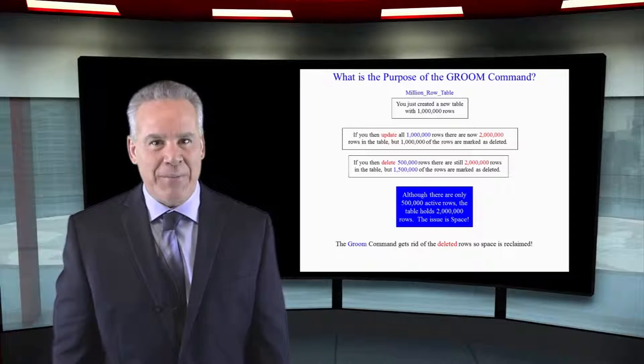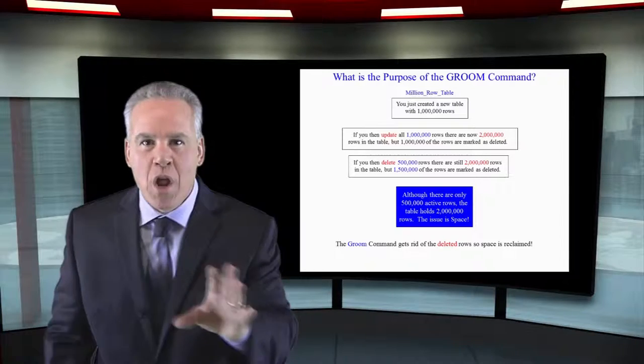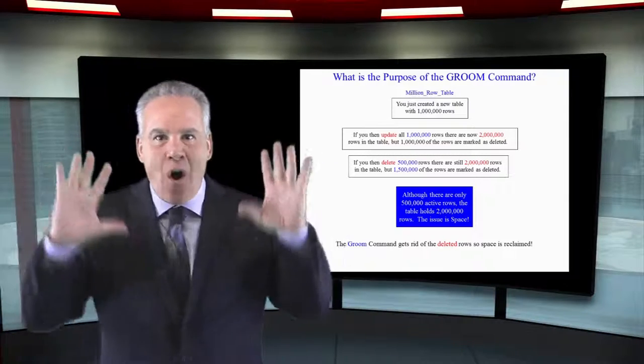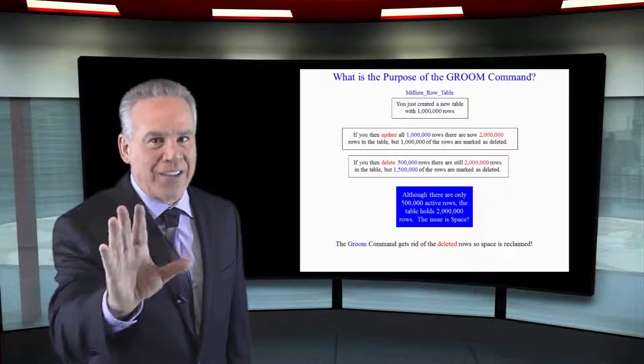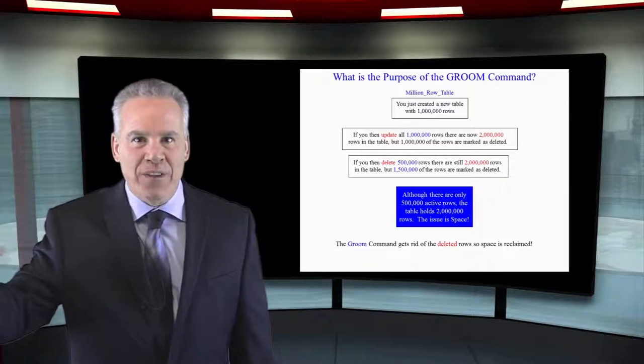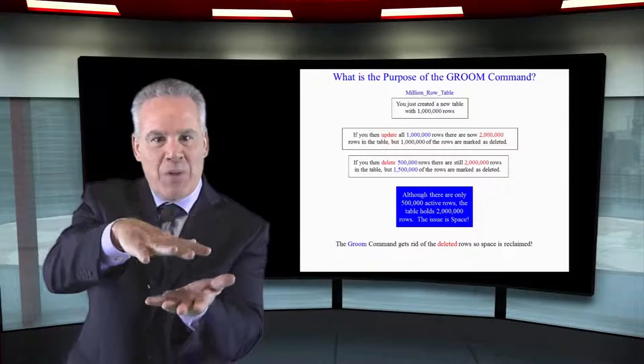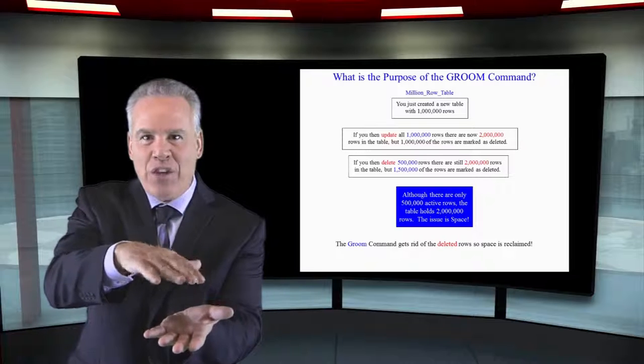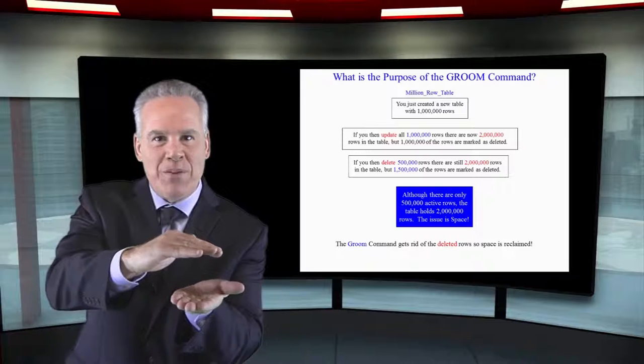Let's get rid of that empty space with a groom. When you groom a table, it actually takes all rows that are not active and gets rid of them physically and this makes the block smaller. Everything's tighter and now you're a lean, mean query machine.